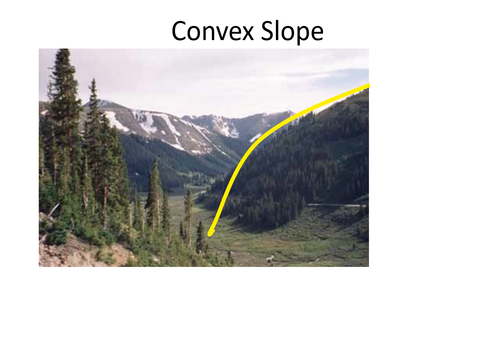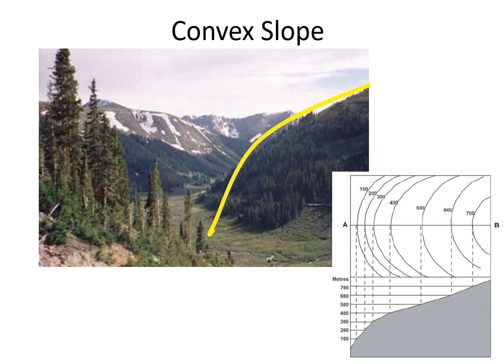Convex slopes are those slopes which are gentle towards the top but become very steep as we come down the hill. On the topographical map, from 700 to 300 meters the contour lines are far apart, indicating a gentle slope, and from 300 to 100 meters the contour lines are close together, indicating a steeper slope towards the bottom.